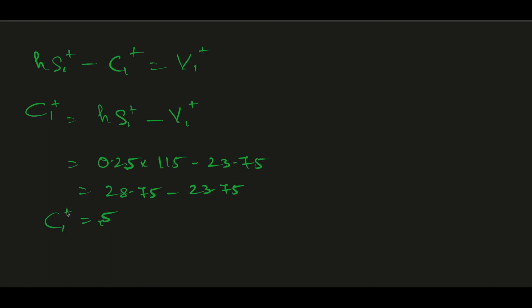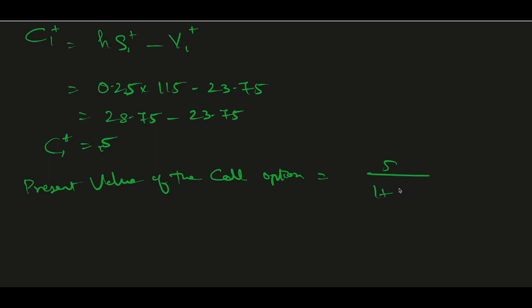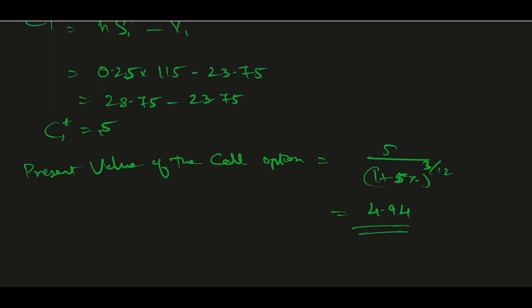So 5 is the no-arbitrage call option price after three months. The present value of the call option is 5 divided by (1 + 5% risk-free rate) raised to (3/12), which comes to 4.939 — approximately 4.94. So 4.94 is the present value of the call option.